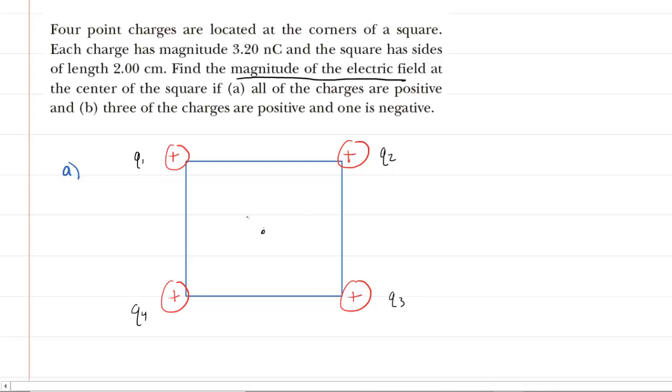For example, let's start with the charge marked Q1. What we do is we go to the location of interest, which again is the center of the square, and we place a positive test charge there. And we ask ourselves, if I put a positive test charge there, in what direction, either towards the positive charge or away from the positive charge, would that test charge be pushed?